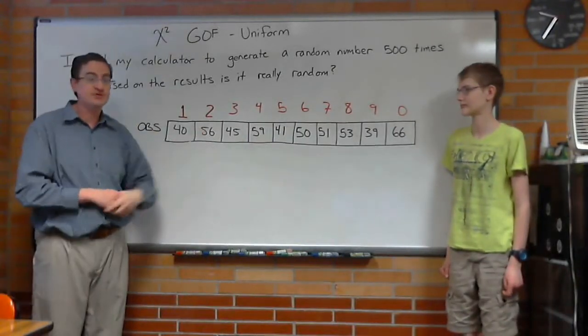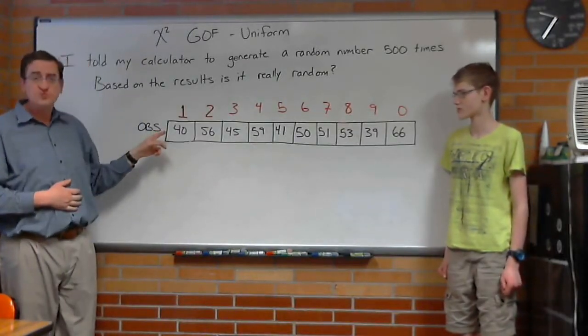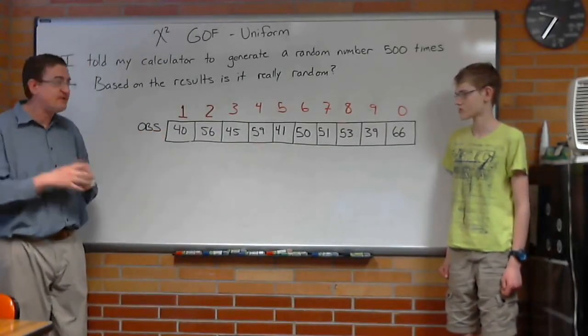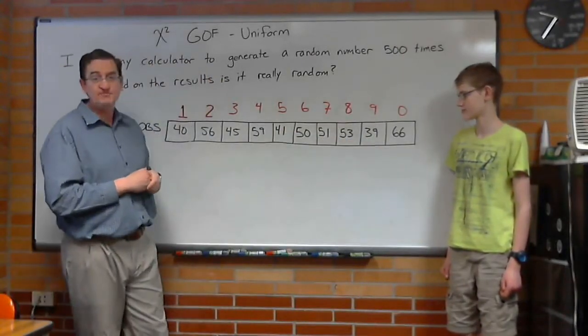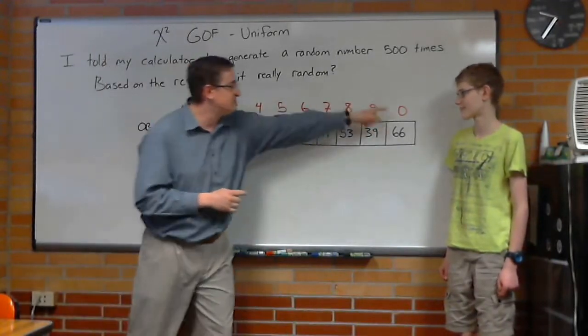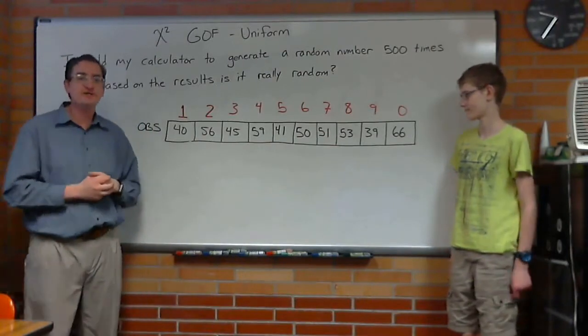We had it randomly get a digit, one through nine with zero. And notice we didn't always get the same amount of each type. It looks like nine came out 39 times, which is kind of low, whereas zero was 66 times. It's kind of high. Do we believe this is random or not?